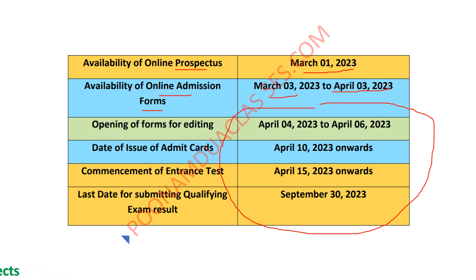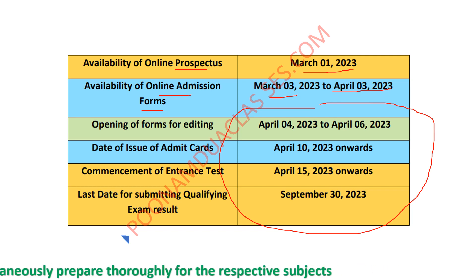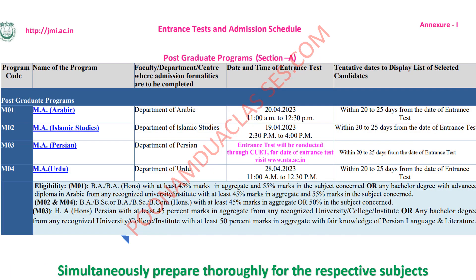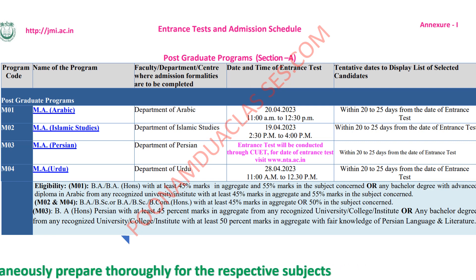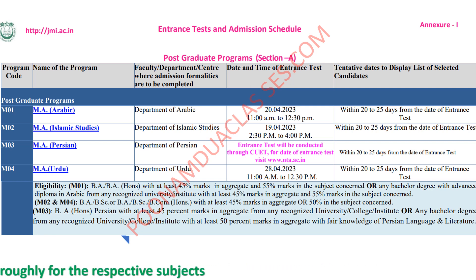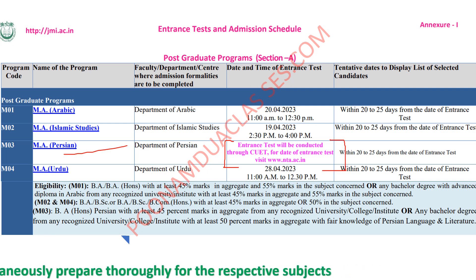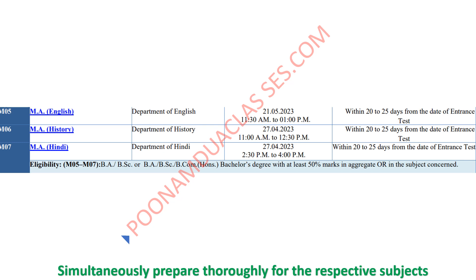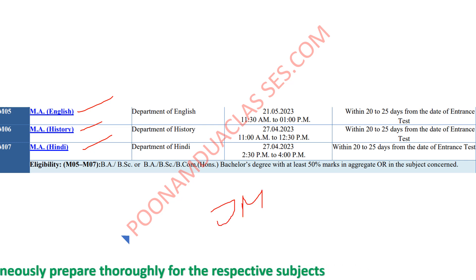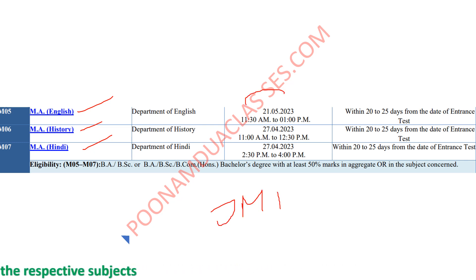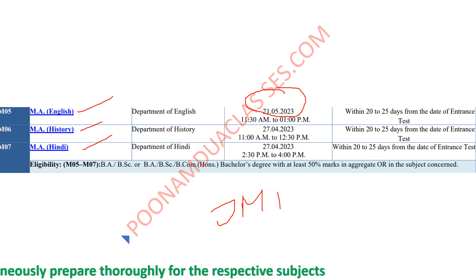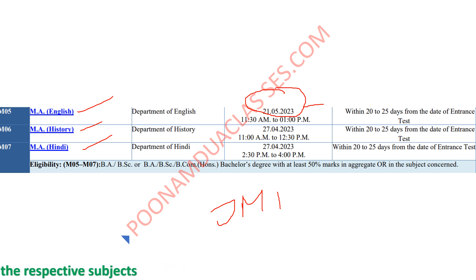These are the rest of the respective dates. For many subjects, GMI will conduct its own examination and there are some subjects for which it will take admission through CUET as well. For example, for MA Portion, MA English, MA History, and MA Hindi — for these major subjects it will be through GMI's internal examination and the date is also given here.